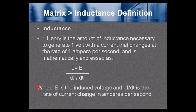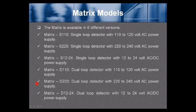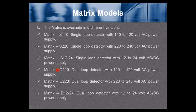There are six different Matrix models: S110 (110 volt), S220 (220 volt), S12-24 (12 to 24 volts AC or DC), D110 (a dual loop 110 volt detector), D220 (a dual 220 volt), and D12-24 (a dual 12 to 24 volt AC or DC).